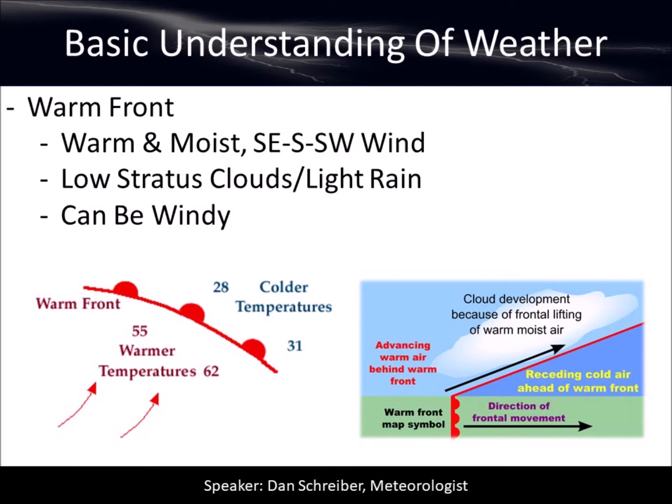A warm front is often accompanied by lower stratus clouds — those gray, low blanket-type clouds. It can contain light rain and can be a little windy, especially during the overnight timeframe. It's also going to be attached to a low pressure system; without a low pressure system nearby, you'll just have southerly wind but not necessarily a warm front. A warm front separates the warm, moist air behind it from cooler temperatures ahead of it.